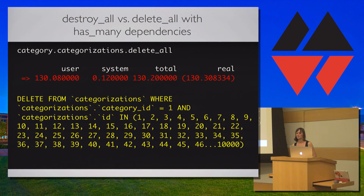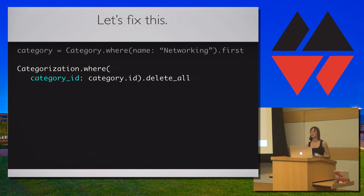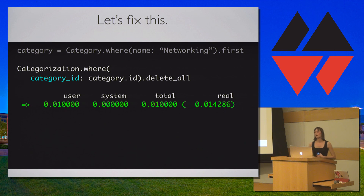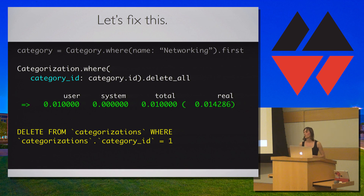There's an easy and clear way to solve this. I find deleting records through associations to be risky and complicated. We already know what we want to remove, so we can collect the categorizations through the category_id and delete them directly instead of through an association. The code is clear and concise, benchmarks at a remarkable speed for 10,000 records, and produces the simple SQL statement we were expecting: delete from categorizations where categorizations.category_id equals the target value.